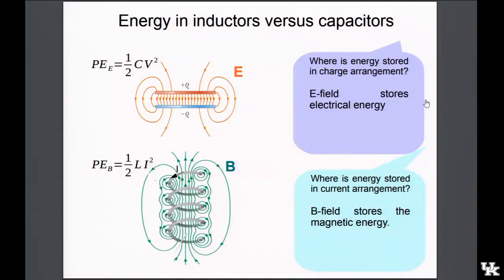Finally, a capacitor stores energy in an electric field: U = ½CV². An inductor similarly stores energy, but in a magnetic field: U = ½LI², where L is inductance and I is the current through the windings. Both capacitors and inductors store electromagnetic energy — one electrical, one magnetic.